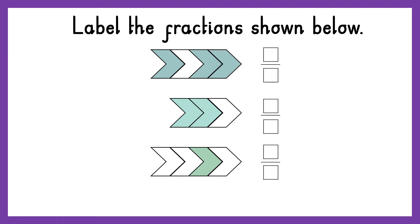Your turn again. Pause the video, find this slide in your work pack and have a go. Be careful, because the denominators are not all the same — count the parts carefully. Let's have a look. The first fraction has one, two, three, four parts altogether, so that's my denominator — the denominator is four. How many parts are shaded? One, two, three parts are shaded, so my numerator is three.